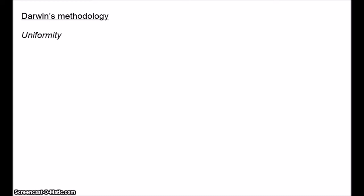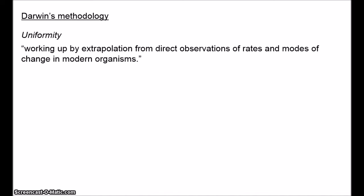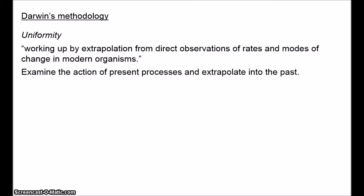All of these points serve as the foundation for Darwin's attempt to build an adequate methodology for natural history. According to Gould, Darwin promoted four methods. First, uniformity — working up by extrapolation from direct observations of rates and modes of change in modern organisms. Darwin's last book, on earthworms, aimed to explain the top soils and landscapes of England by appealing to the actions of earthworms: very slow, seemingly insignificant on human timescales, but capable of making dramatic changes over millions of years. With respect to evolution, Darwin draws an analogy between natural selection and artificial selection — we know artificial selection can produce significant changes in species over small timescales, so why shouldn't natural selection, over millions or billions of years, produce the whole variety of life?